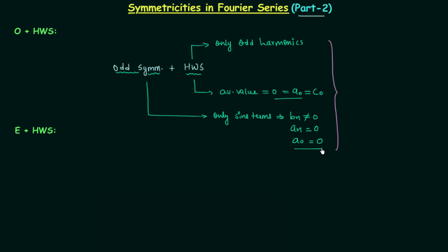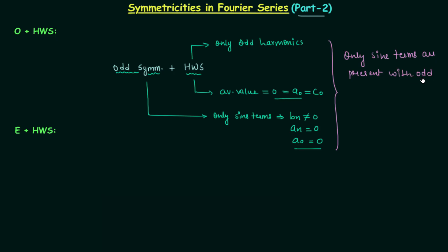Combining the results: A0 is 0, so no DC term is present. An is also equal to 0, so no cosine terms are present. Bn is not equal to 0, meaning only sine terms are present. Additionally, we have only odd harmonics — so only sine terms with odd harmonics are present. This is the final conclusion: whenever we have an odd half wave symmetric signal, the Fourier series expansion will have only sine terms with odd harmonics.